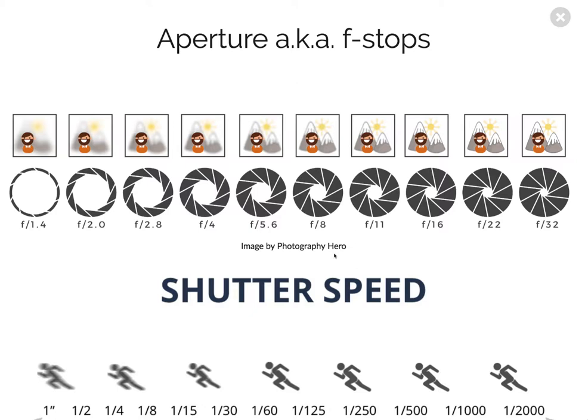I'm going to talk about the three exposure settings on any camera. If you can learn how these three things work and work together, you will be able to use any camera that you come across, from old school to new school. These are really the very basics of how image capturing works and exposure for your cameras. The three things are aperture, shutter speed, and ISO.